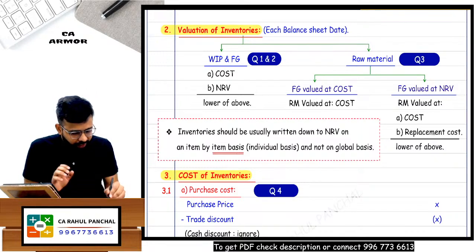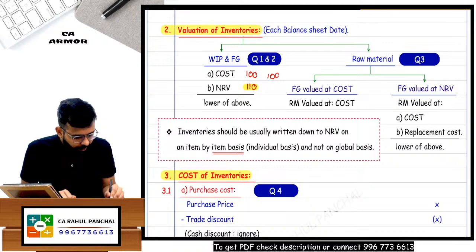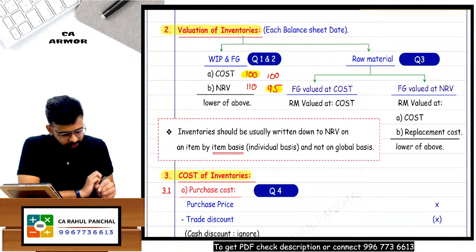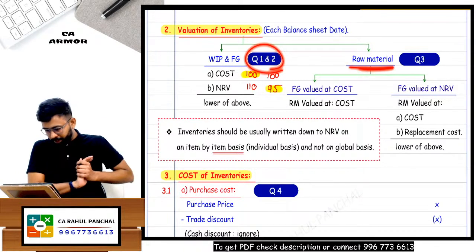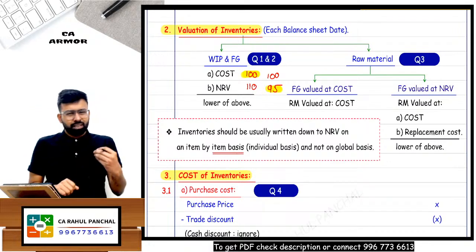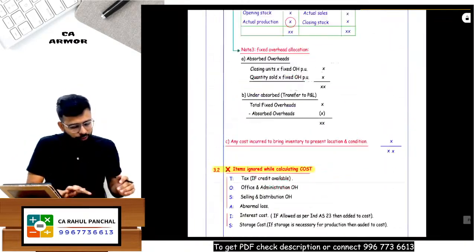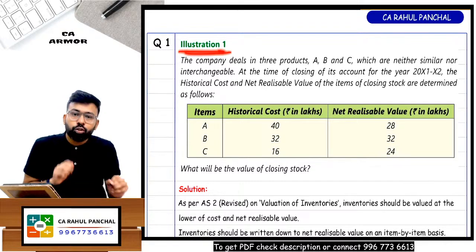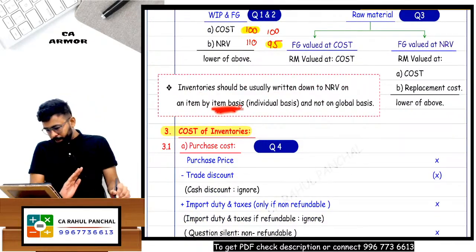Listen carefully. If cost is 100 and NRV is 110, you record at cost — 100. If cost is 100 and NRV is 95, you record at NRV — 95, whichever is lower. There is also an important note: inventory should be written down on an item-by-item basis, not in totality. Let us solve question number one — Illustration 1 from the study material.